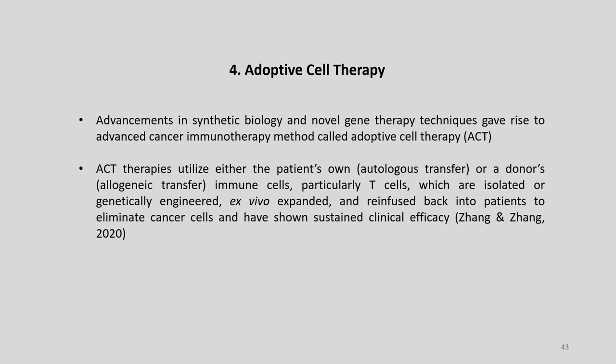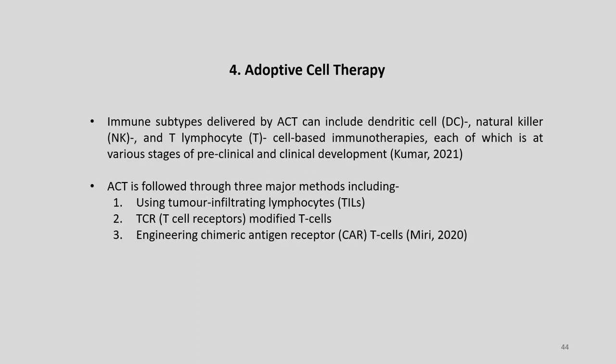Advancements in synthetic biology and novel gene therapy techniques have given rise to advanced cancer immunotherapy methods called adoptive cell therapy (ACT). ACT therapies utilize either the patient's own or a donor's immune cells—the first known as autologous transfer and the second as allogeneic transfer—particularly T cells which are isolated or genetically engineered ex vivo, expanded, and re-infused back into patients to eliminate cancer cells, showing sustained clinical efficacy. Immune subtypes delivered by ACT can include dendritic cells, natural killer cells, and T lymphocyte-based immunotherapies, each at various stages of pre-clinical and clinical development.